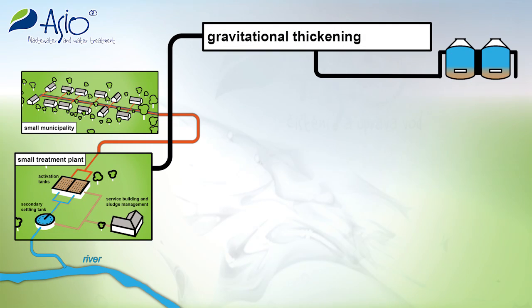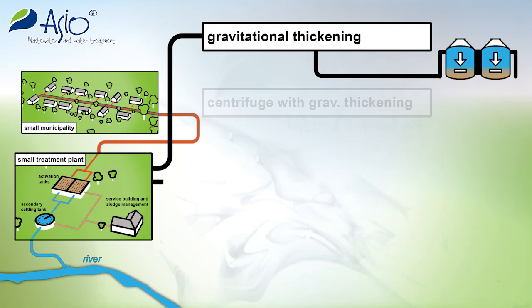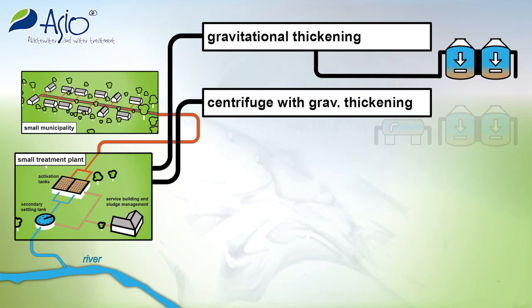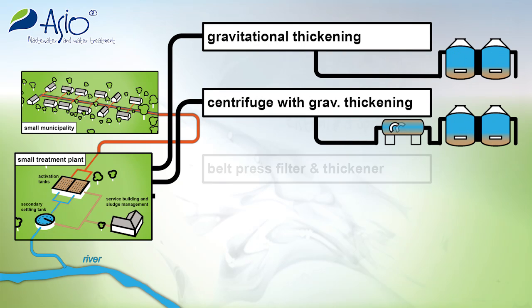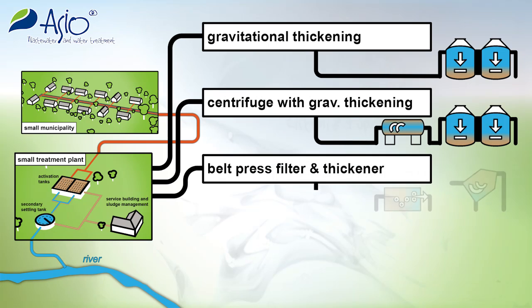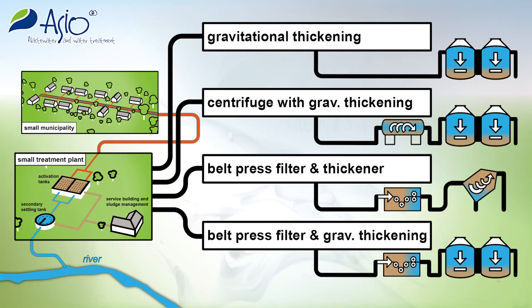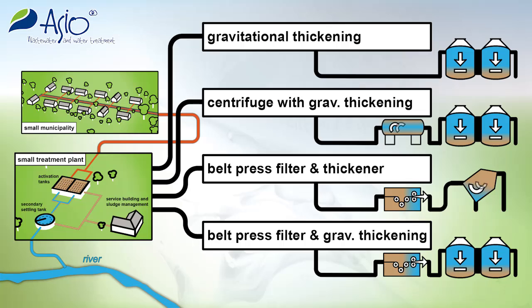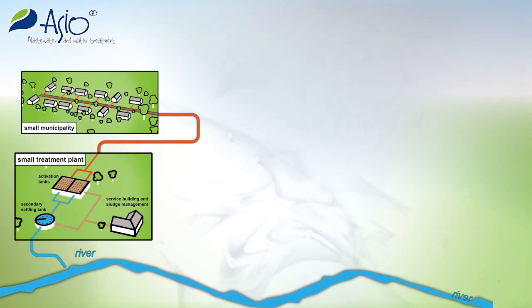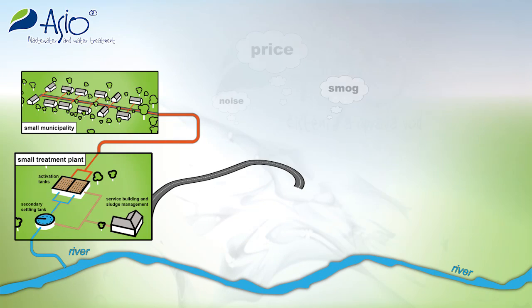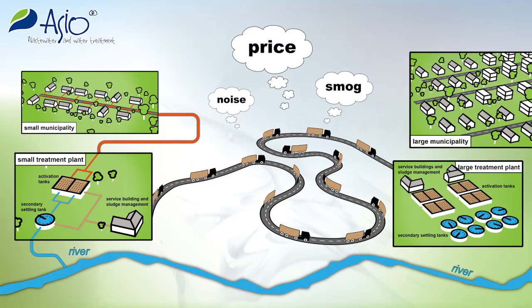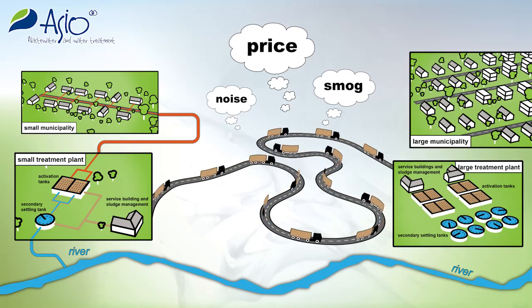A reduction in the water quantities contained in the sludge directly at the wastewater treatment plant — i.e. sludge dewatering — offers a suitable solution. At present there are numerous dewatering processes on the market, but they mostly represent equipment types suitable by their capacity and acquisition price for larger plants.